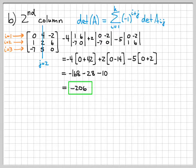Hopefully this example helped you learn how to do a matrix determinant computation expanding about any arbitrary row or column. It's pretty straightforward. Once you figure out the starting sign, you just toggle signs back and forth. You just need to keep track of how to compute that initial sign based on i plus j — whatever row plus column you're currently in gives you the starting sign.